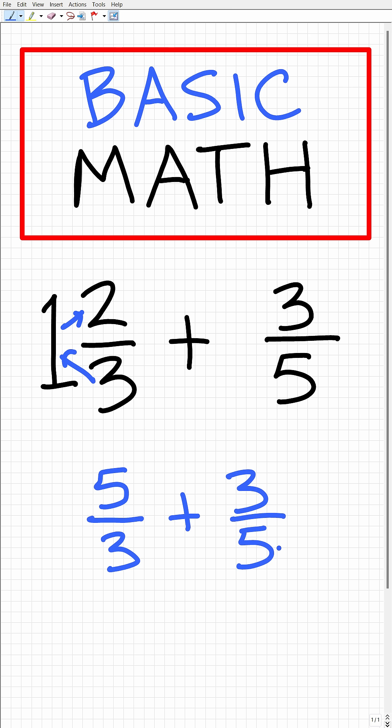So let's start over here. We can change this 5 to 15 by multiplying it by a 3, but we also need to multiply the numerator by a 3 as well. And then we could change this 3 into a 15 by multiplying it by 5, but we need to multiply the numerator by 5 as well.